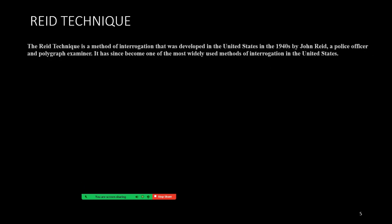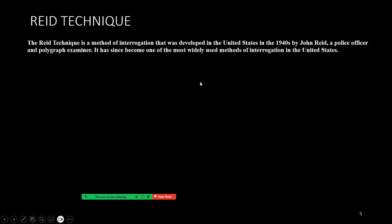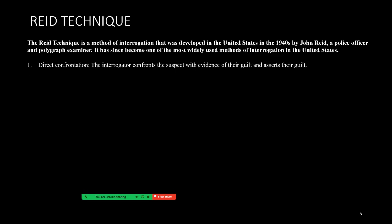The Reid Technique is a method of interrogation developed in the United States in the 1940s by John Reid, a police officer and polygraph examiner. It has since become one of the most widely used methods of interrogation in the United States. There are a number of elements to the Reid method. The first is direct confrontation, in which the interrogator confronts the suspect with evidence of their guilt and asserts that the suspect is guilty.